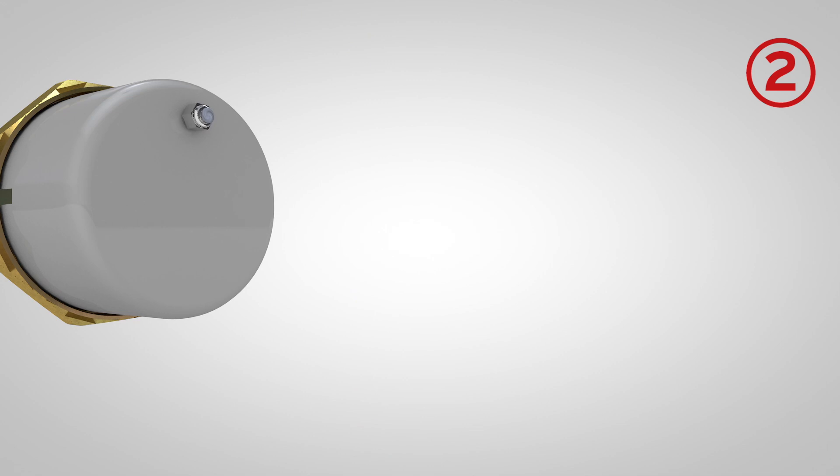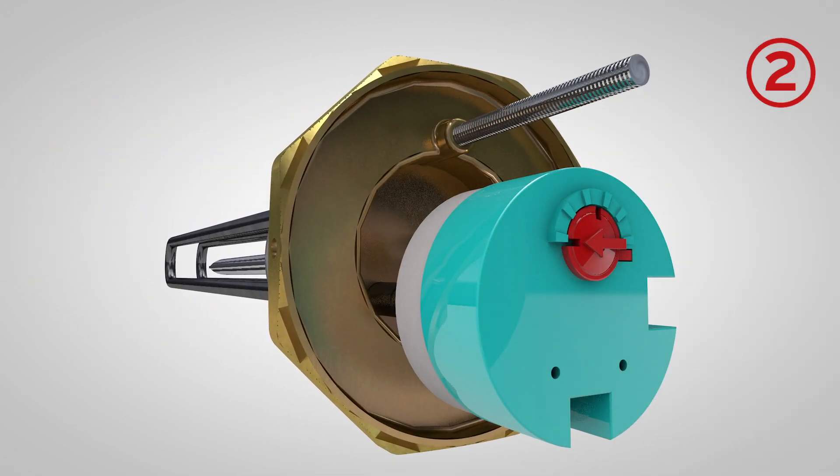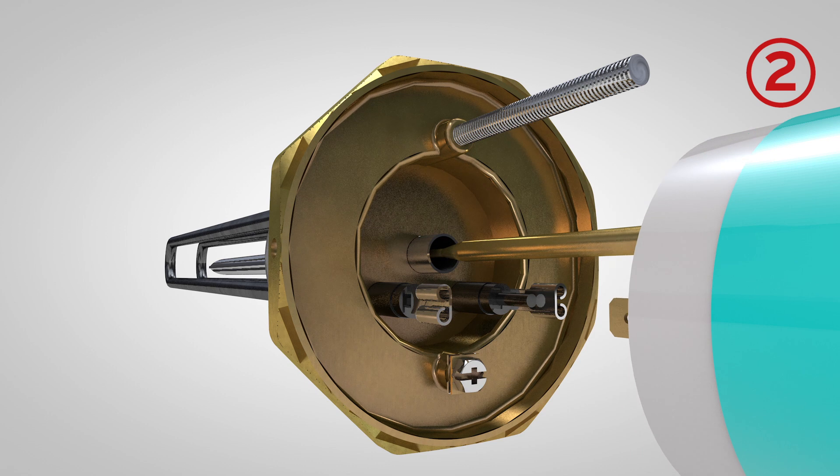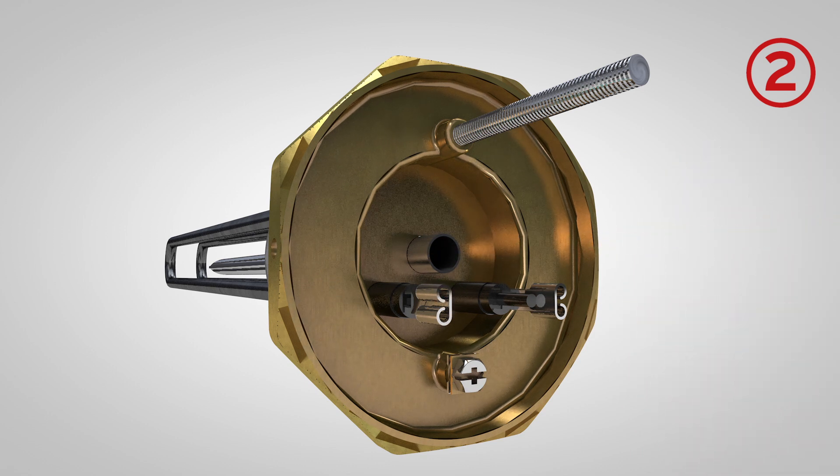Isolate the immersion heater and remove the cap to allow you to fully inspect the heater in situ to try and identify where the leak is coming from. A key point is to check for obvious leaks at braze joints, the thermostat pocket and the brass body itself.